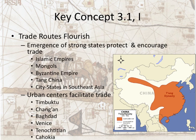You also see urban centers throughout these states and empires that facilitate trade: Timbuktu in West Africa, Chang'an in China, Baghdad in the Middle East, Venice in Europe, Tenochtitlan in the Americas, and Cahokia in North America along the Mississippi River Valley. These urban centers served as places where people could trade, making trade more effective and easier.